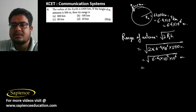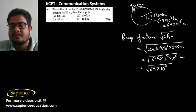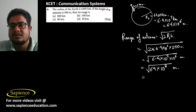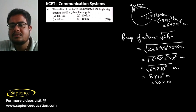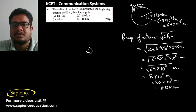Computing further: √(64 × 10⁸) = 8 × 10⁴ m, which is 80 km. Option C is the correct answer.